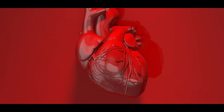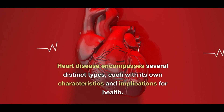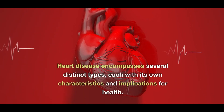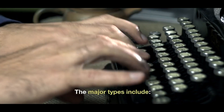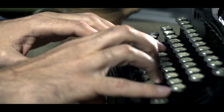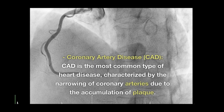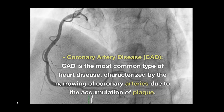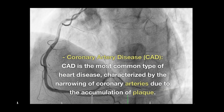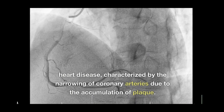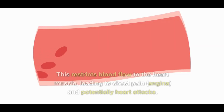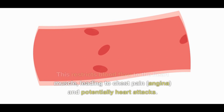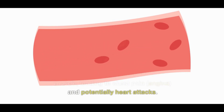Types of Heart Disease. Heart disease encompasses several distinct types, each with its own characteristics and implications for health. The major types include: 1. Coronary Artery Disease (CAD) — CAD is the most common type of heart disease, characterized by the narrowing of coronary arteries due to the accumulation of plaque. This restricts blood flow to the heart muscle, leading to chest pain, angina, and potentially heart attacks.